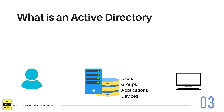An object in an Active Directory can be a user, computer or device. The characteristics of each of these objects are stored as attributes. For example, the address of a user is a characteristic, or account expiry date — we can call these attributes.